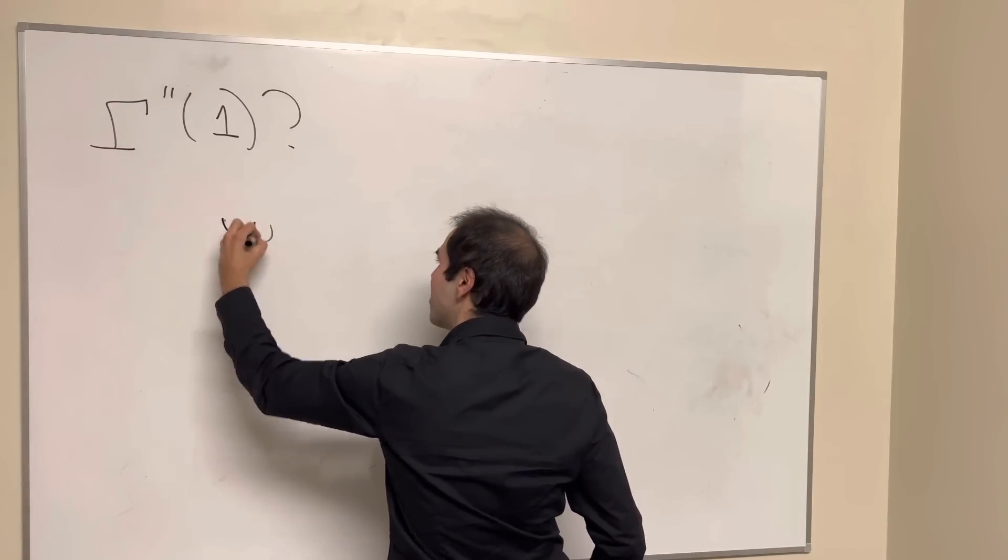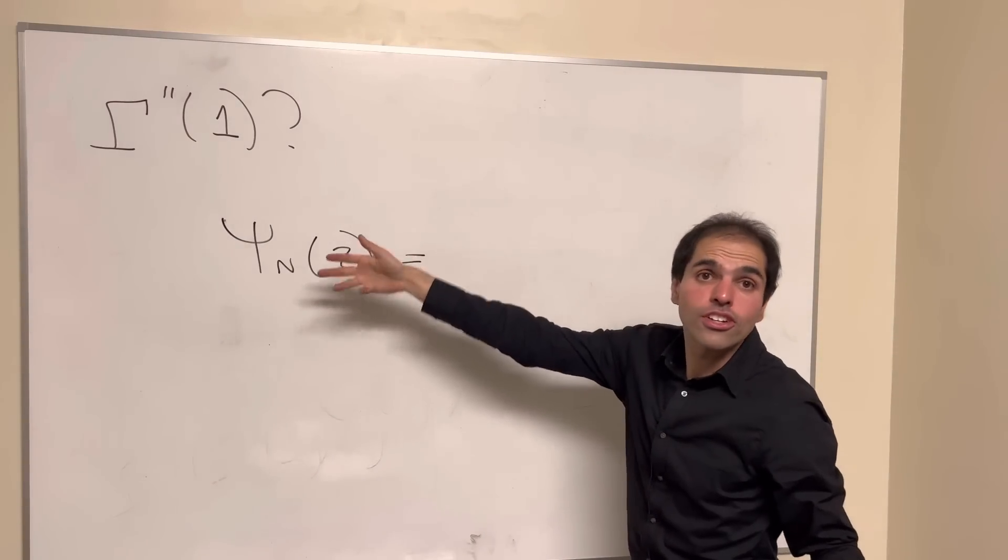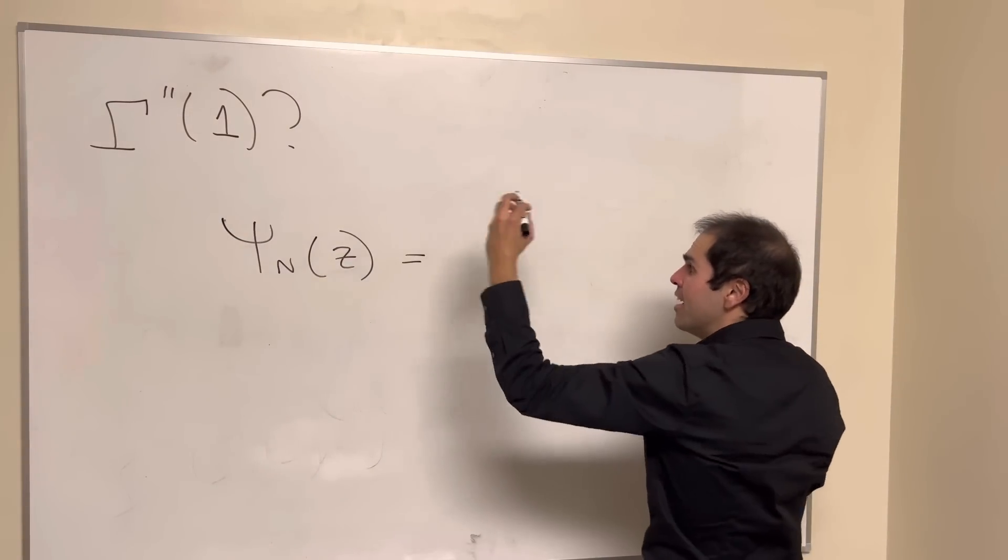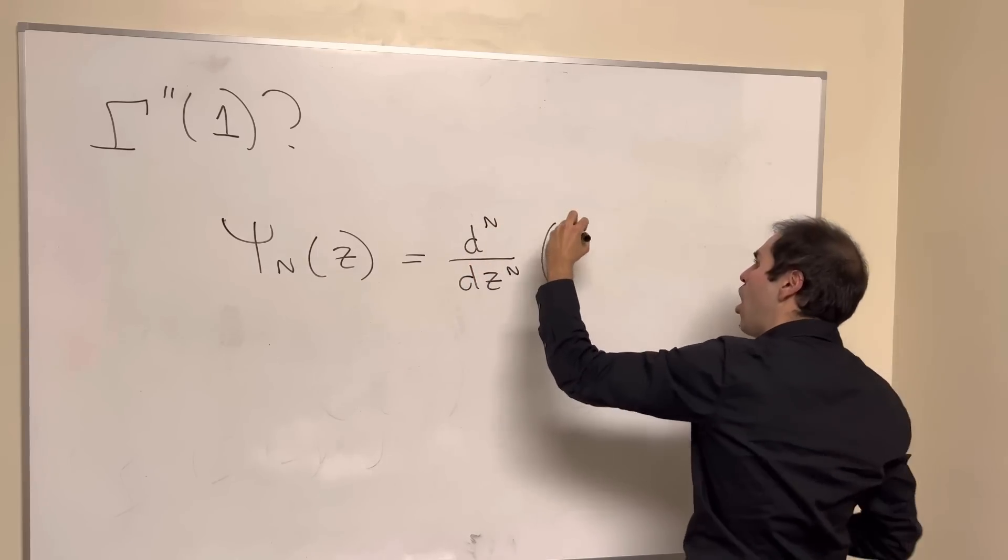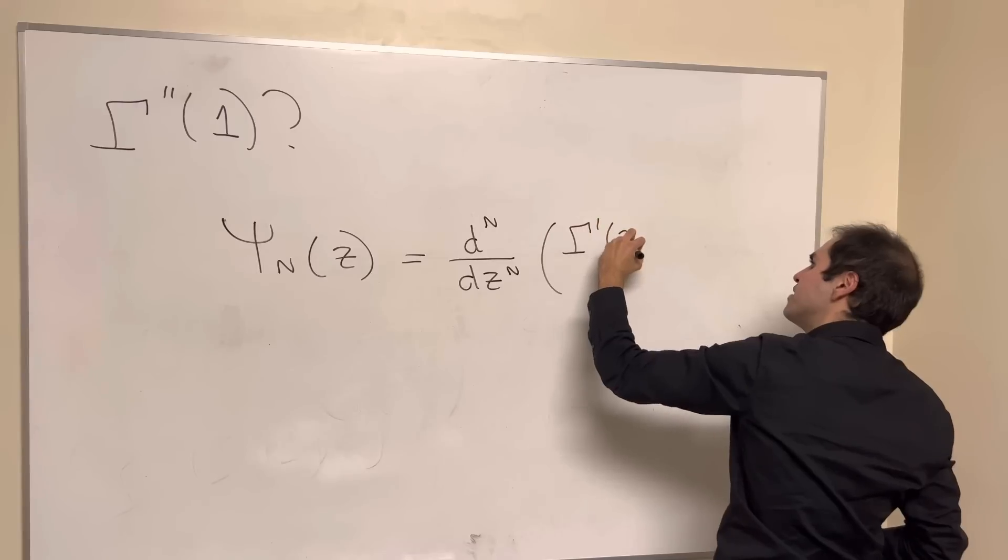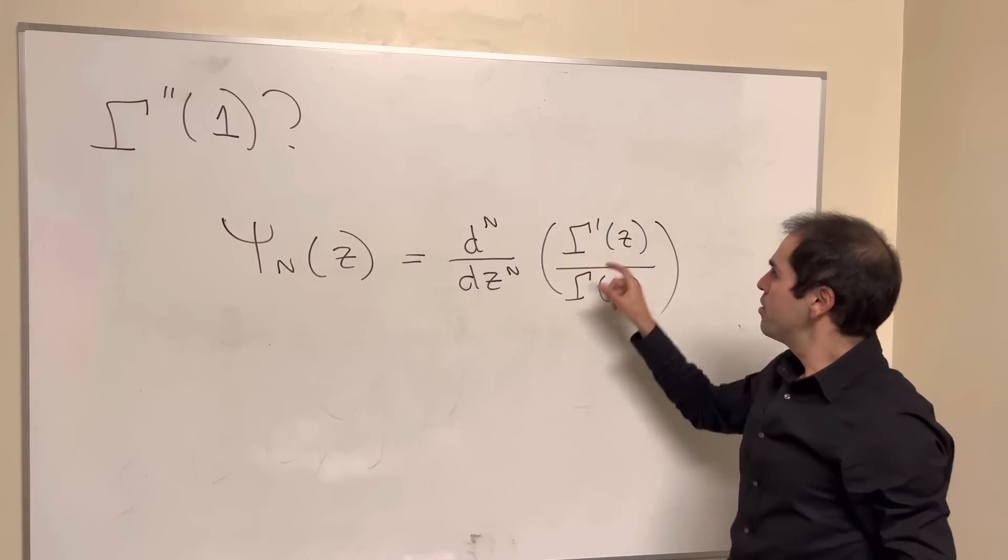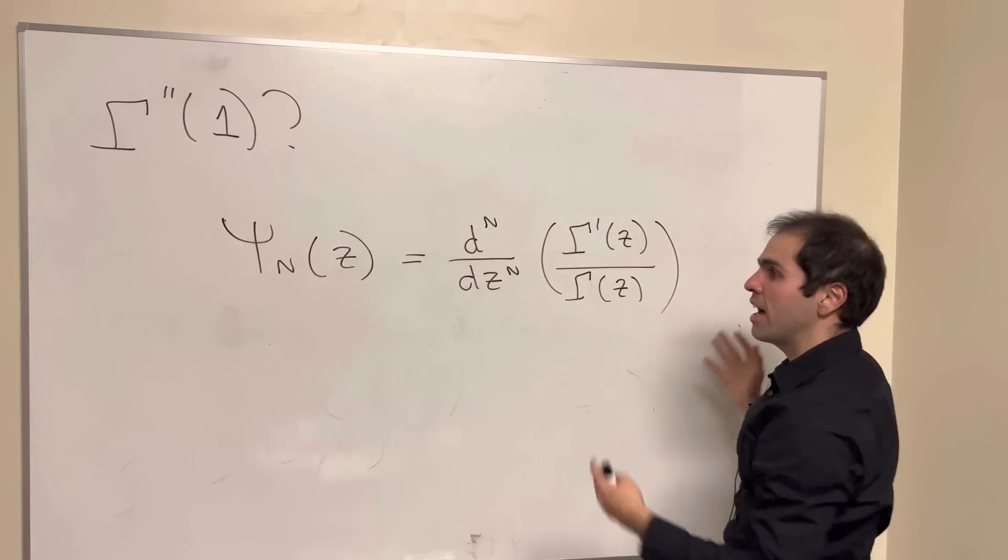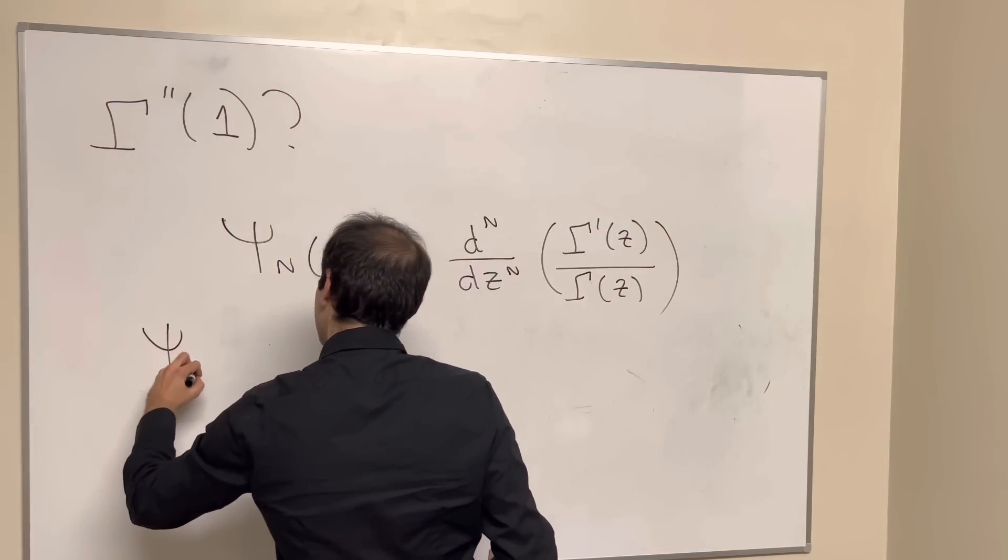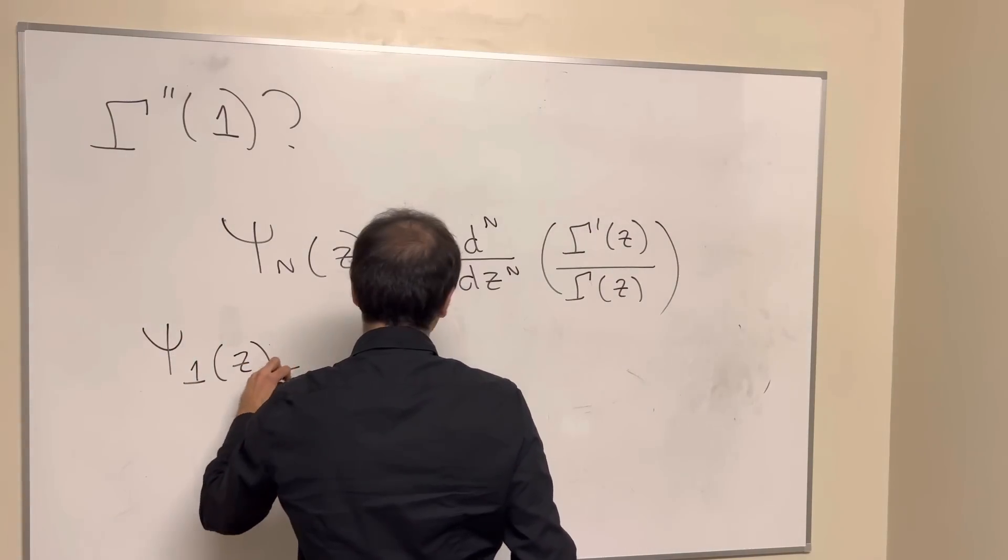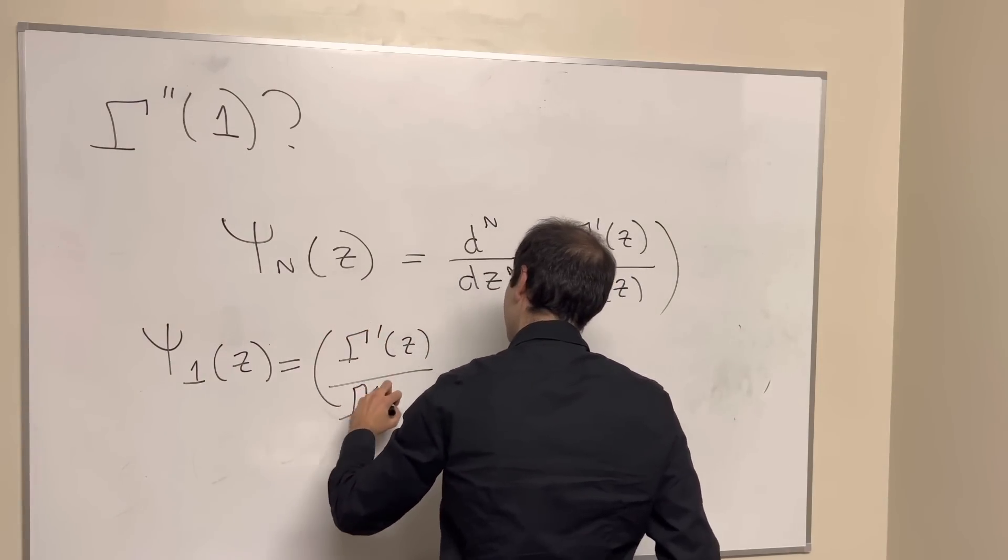So the polygamma function of order n is just the nth derivative of gamma prime of z over gamma of z. And because we need gamma double prime, which arises from differentiating this once, we consider the polygamma function of order 1. So that's just gamma prime of z over gamma of z prime.